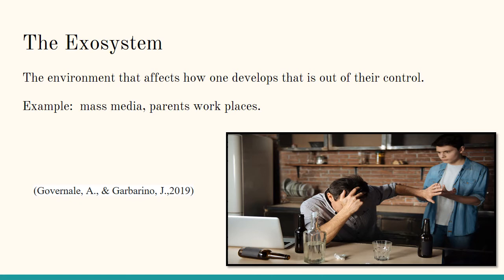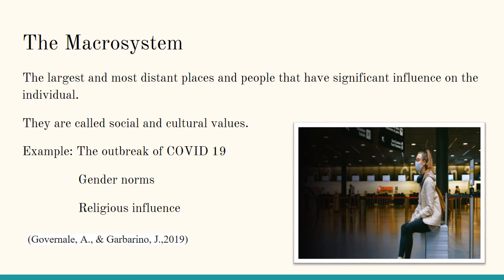The macrosystem is known as the largest and most distant places and people that have significant influence on the individual. It is also known as the culture in which the adolescent lives. Culture refers to the behavior patterns, beliefs, and all other products of a group of people that are passed on from one generation to the next. For example, an adolescent in a rural community may have a reserved lifestyle, not exposed to a wide variety of social activities, and may tend to be shy and reserved, with a way of life surrounding church and one or two community activities.